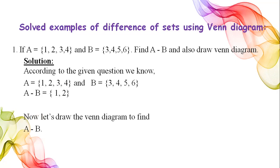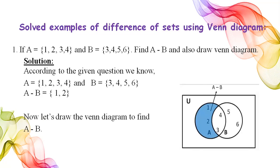Looking at the Venn diagram: this is our universal set. We draw set A and then set B. The common elements are written in the overlapping part, and the shaded area shows our answer, that is A difference B.